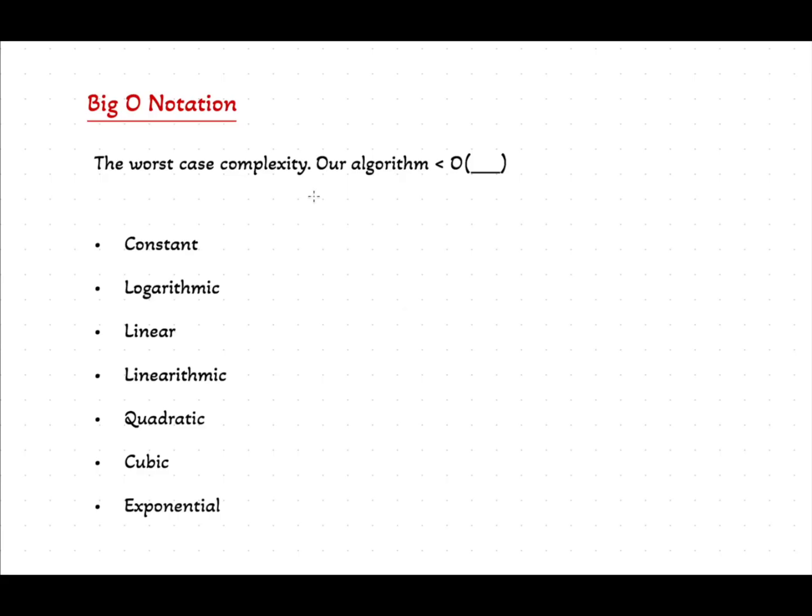When it comes to analyzing algorithms, textbooks usually give three main notations. Big O, Omega, Theta. Big O for worst case, Omega for best case, Theta for average case. But in most coding interviews and real world discussions, we almost always focus on Big O notation. Why? Because if you know your algorithm's worst case performance, you already have an upper bound. The algorithm will never perform worse than that. So if it can handle the worst case scenario, everything else is better than that.